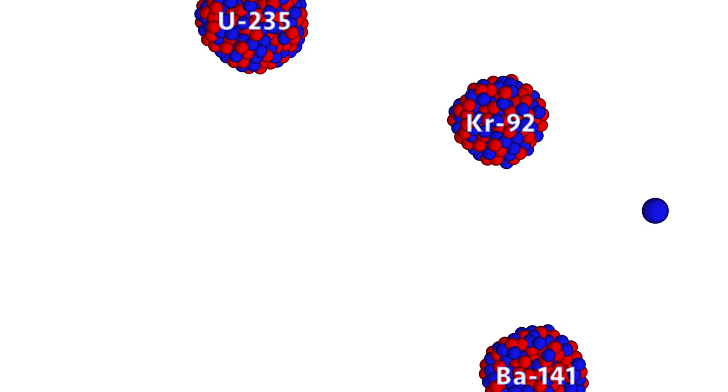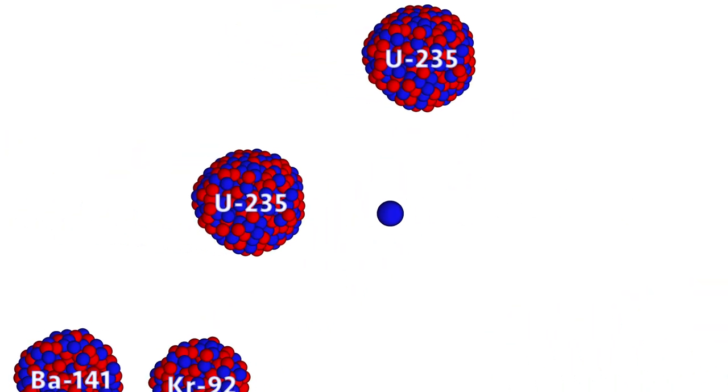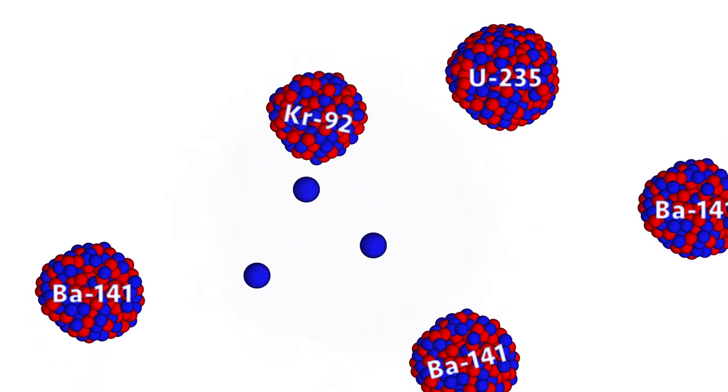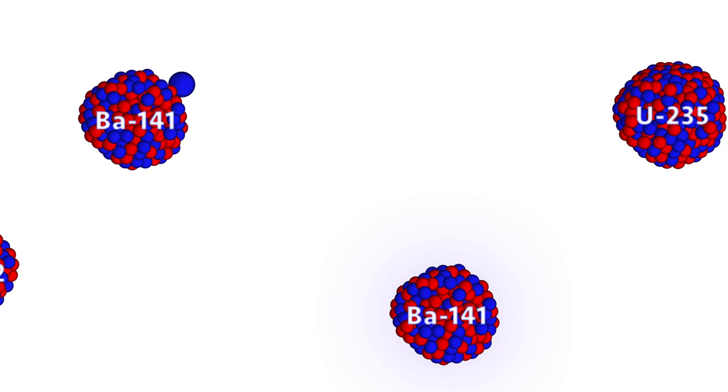But if fissile materials can fission and create chain reactions, why don't they just spontaneously explode? A chain reaction will only occur if there is a critical mass of fissile material, which happens when the chance of the stray neutrons hitting something fissile is greater than the chance of them escaping or being absorbed by a non-fissile material.